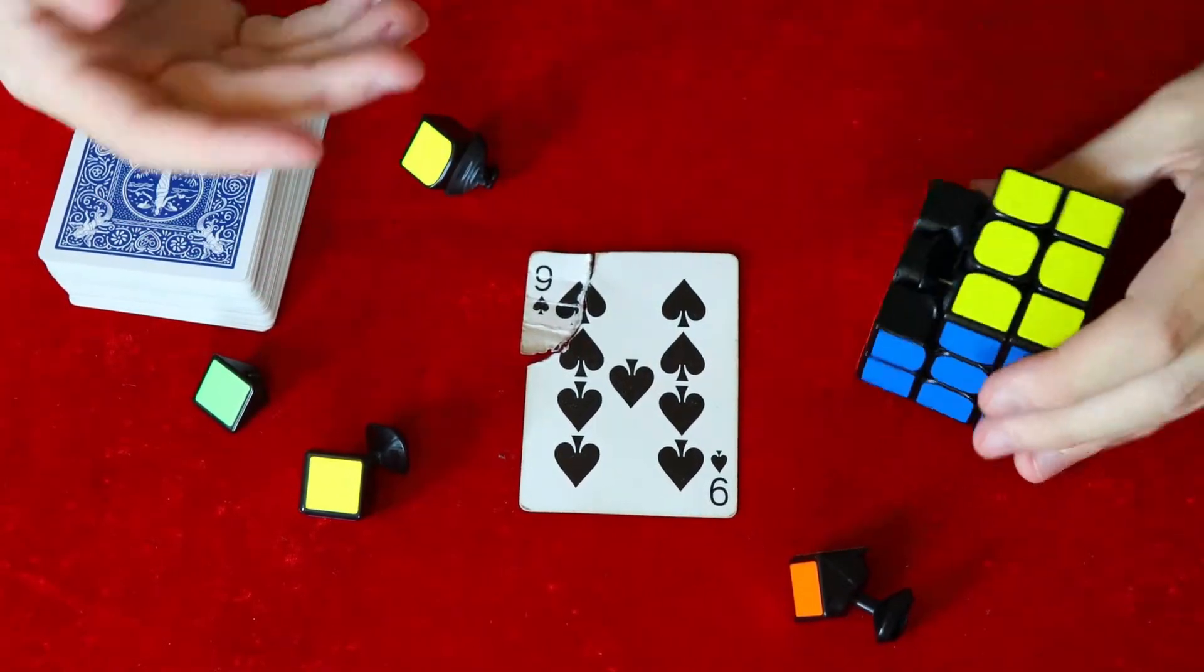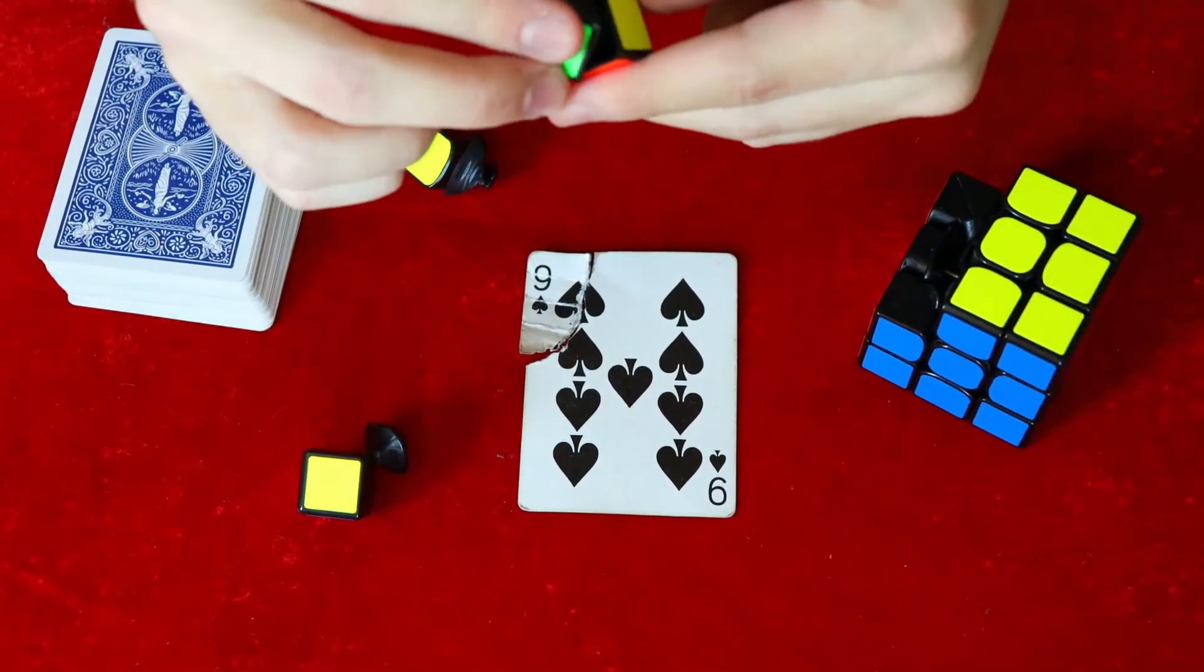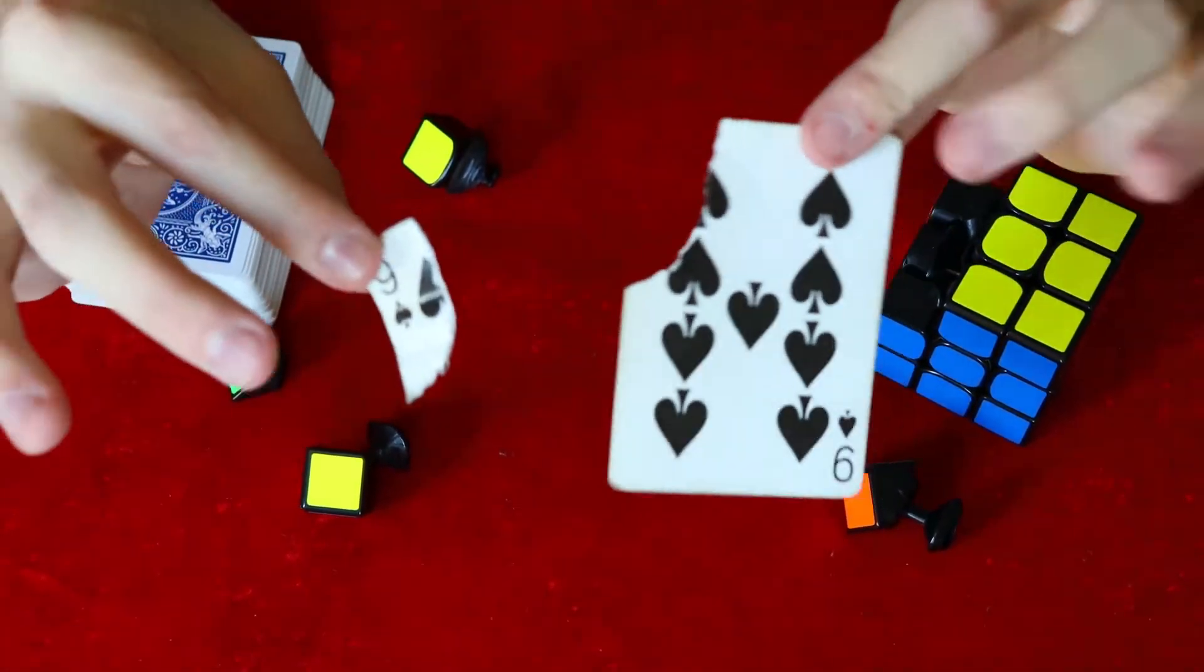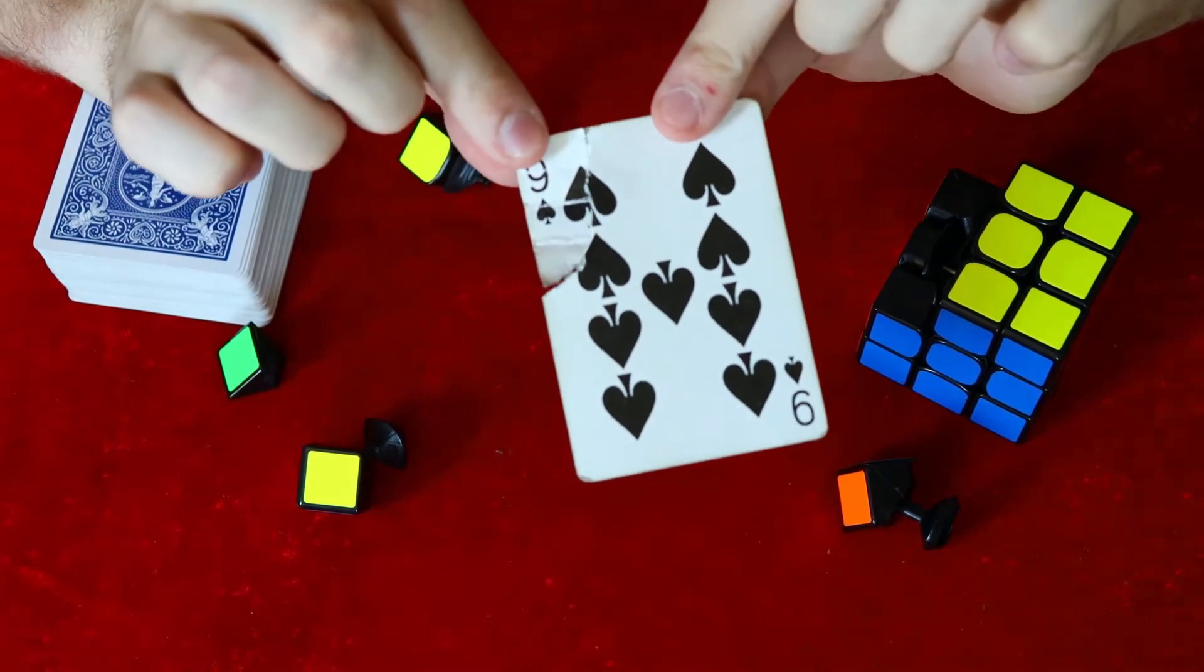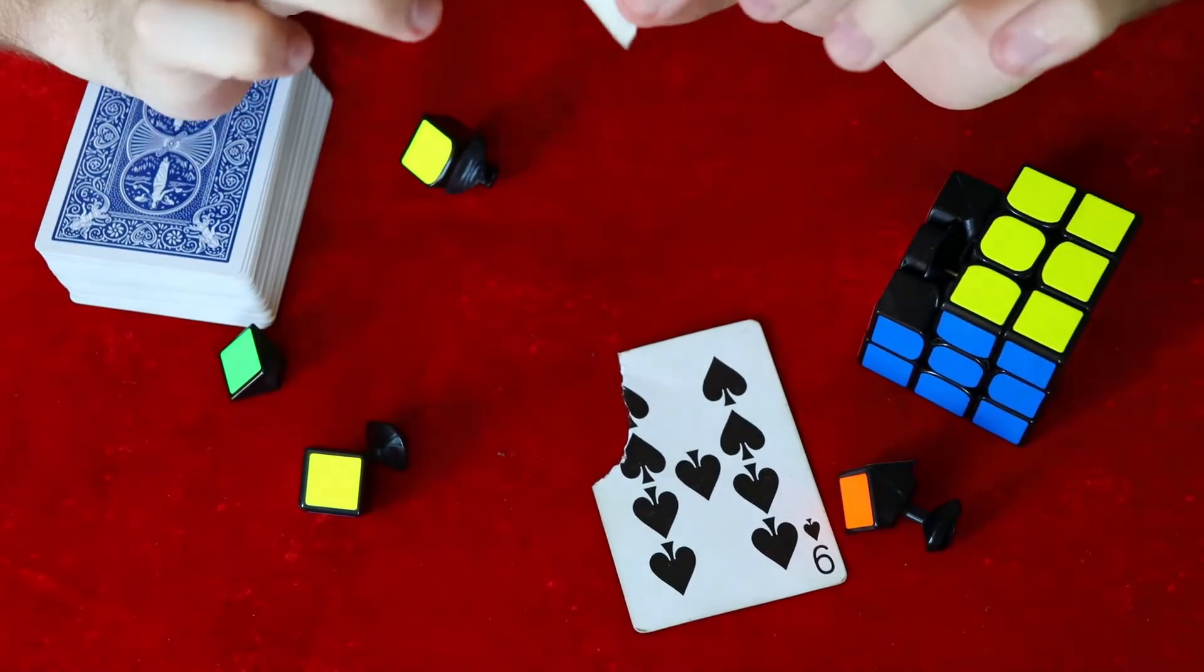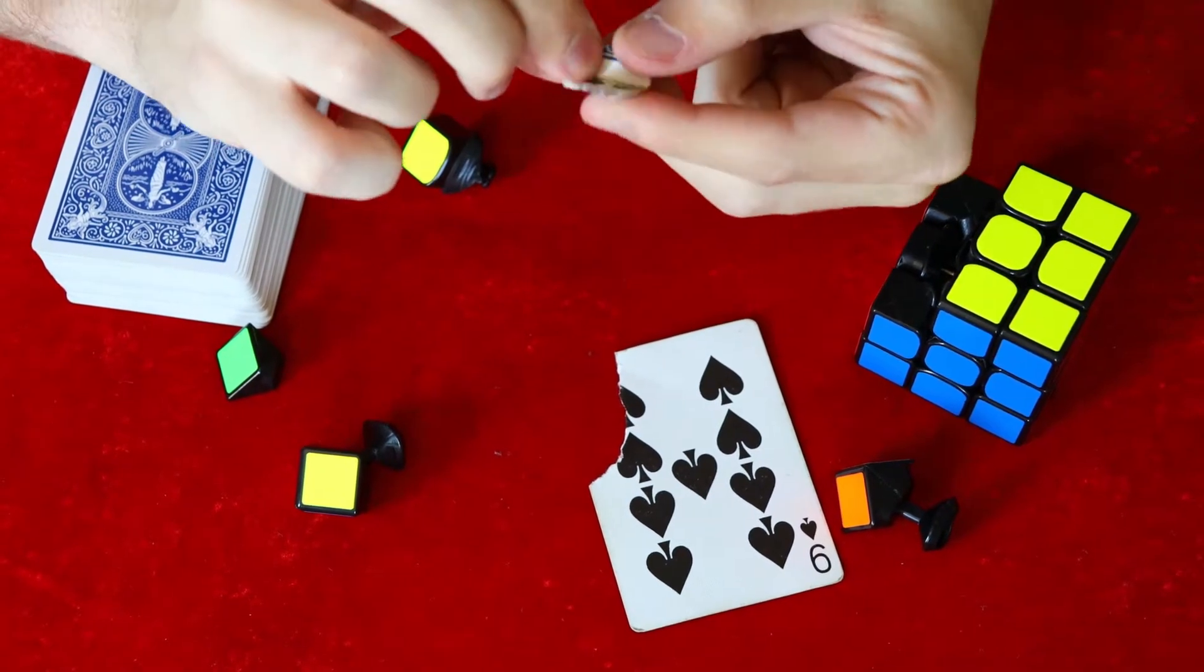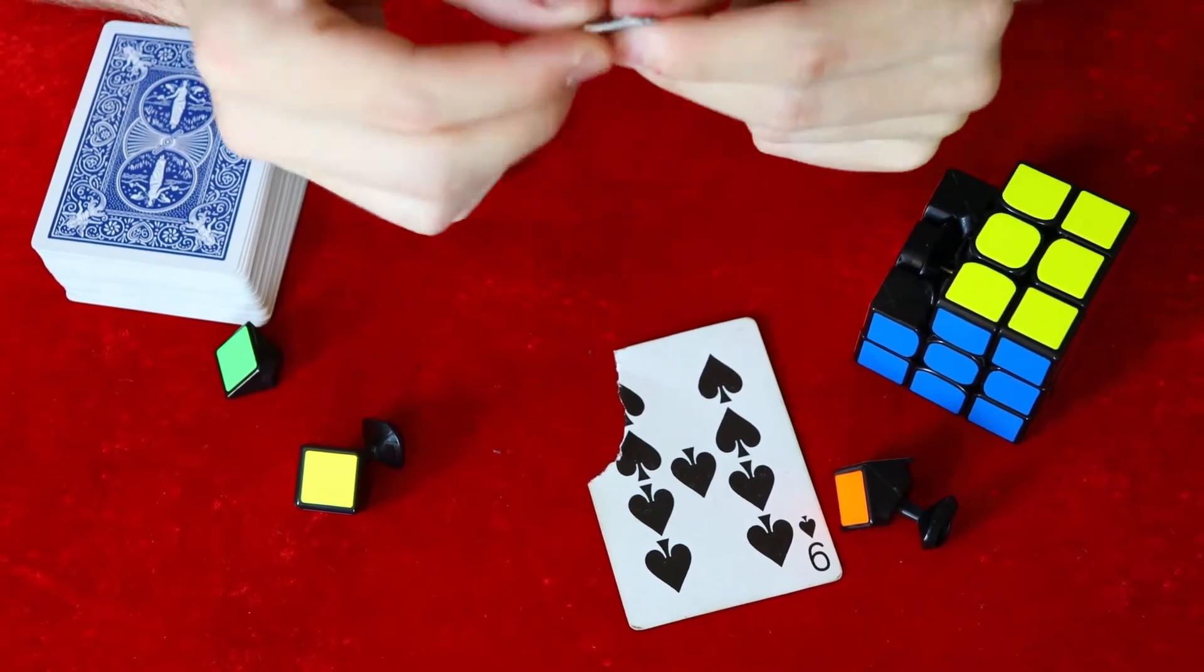You can obviously put the card in the middle of the cube like that, but I like to put it into one of the pieces. So this is a speed cube where you can remove that. So you're going to take any card you want at all and just rip off the corner, just like I did here. So this is the nine of spades. I ripped off the corner. And now what you're going to do is just fold this up so that you can fit it inside the cube.